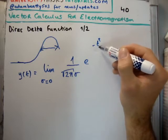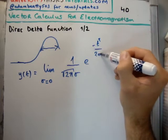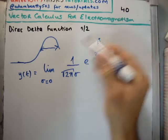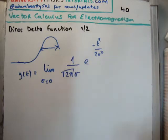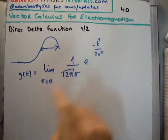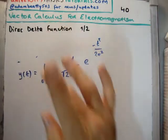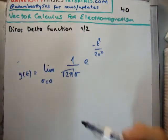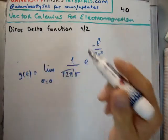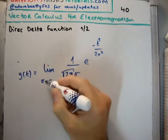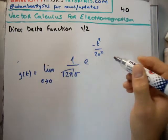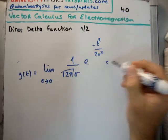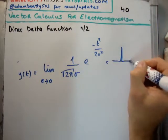This is our Gaussian: we have this normalization factor 1 over root 2π sigma, and then our Gaussian function e to the minus t squared over twice sigma squared. The general form is e to the minus x squared over y squared for a Gaussian. We can see that as you take the limit as sigma goes to zero, it's going to approach our impulse function.